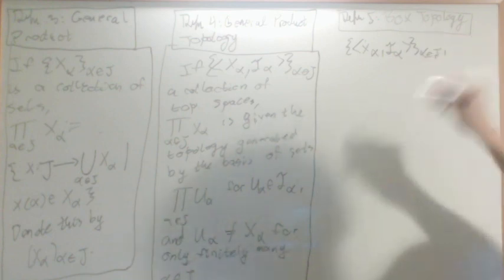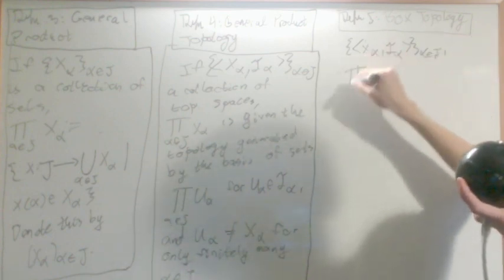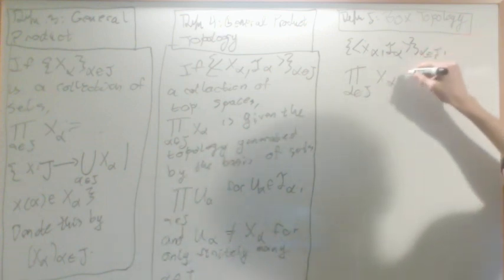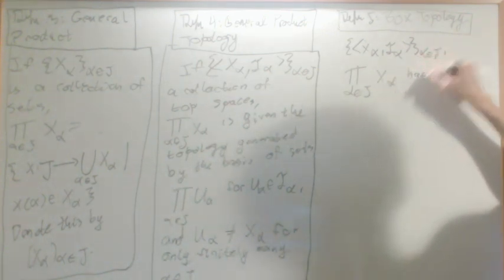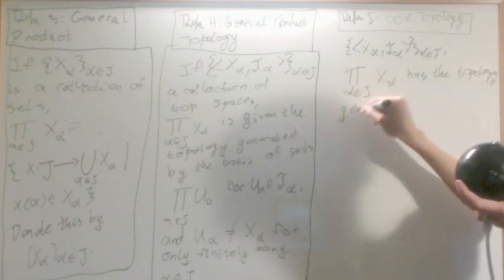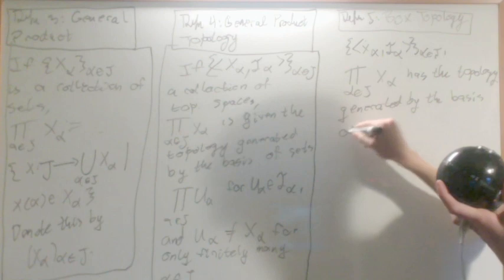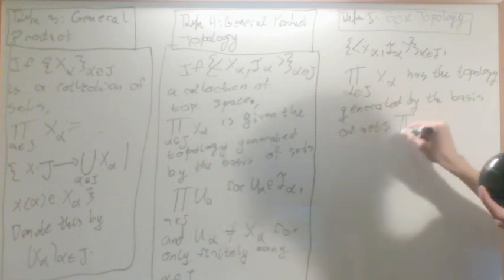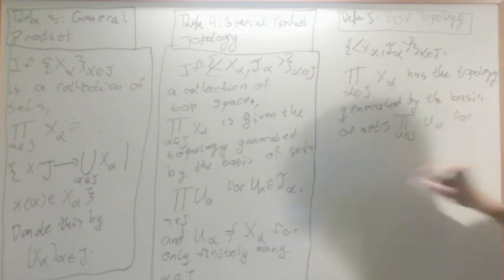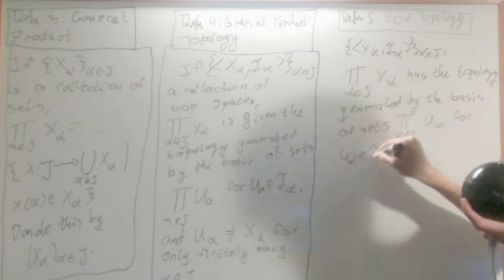And then pi alpha in J x alpha has the topology generated by the basis of sets, the product for alpha in J of u alpha, for u alpha an element of t alpha.